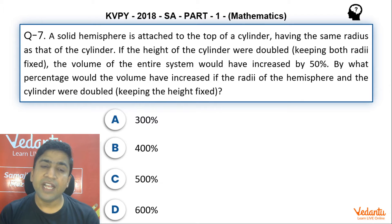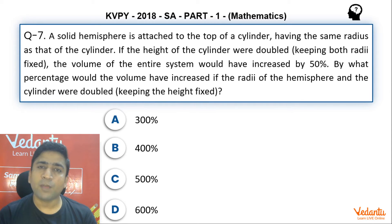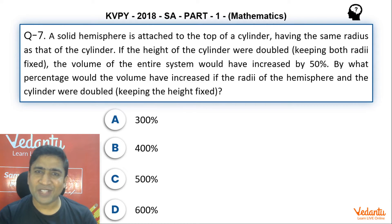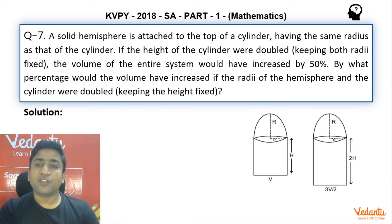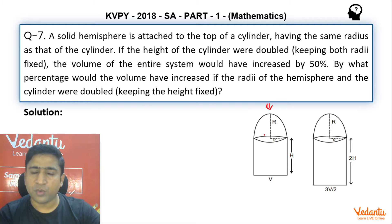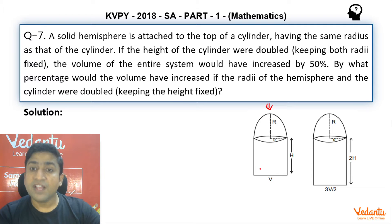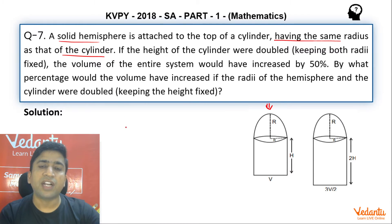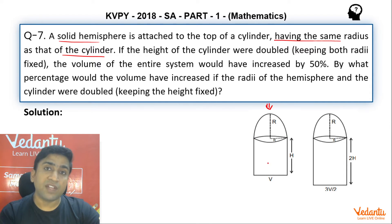You need to understand what exactly is happening here. Initially, a solid hemisphere is on top of the cylinder, and they are manipulating height and radius and giving you the data. I've shown you the diagram — there is a cylinder, and on the top of that we have a hemisphere. Both the hemisphere and the cylinder are of the same radius r, and the height of the cylinder is h. This is the original setup we are projecting.